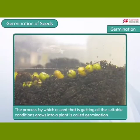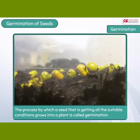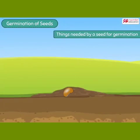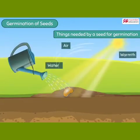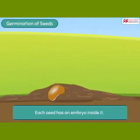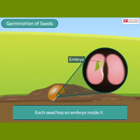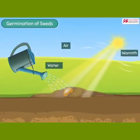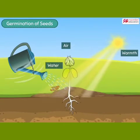The process by which a seed that is getting all the suitable conditions grows into a plant is called germination. When we say suitable conditions, we mean all the things needed by a seed to germinate, and those things are water, warmth, and air. Each seed has a tiny baby plant called embryo inside it. Once a seed gets water, warmth, and air, the embryo literally wakes up and starts growing to form a baby plant.